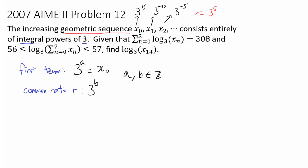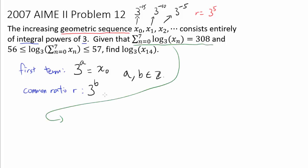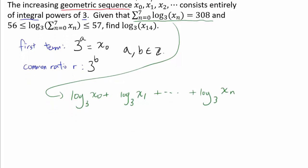Given that the summation from n equals 0 to 7 of log base 3 of x_n equals 308, and log base 3 of the summation of x_n is between 56 and 57, we need to find log base 3 of x₁₄. Let's start with the first equation. We are adding a bunch of logarithms of the same base, so that's log base 3 of the product x0 · x1 · x2 · ... · xn, and we know that's equal to 308.